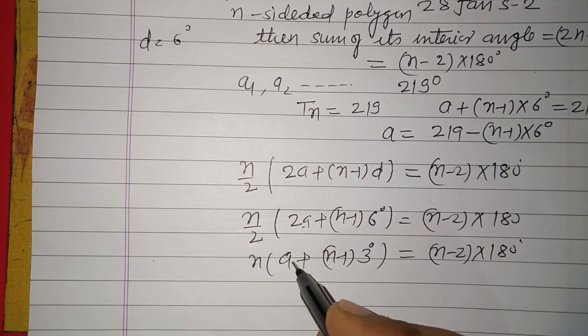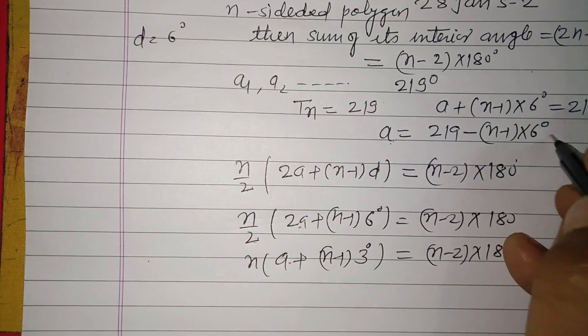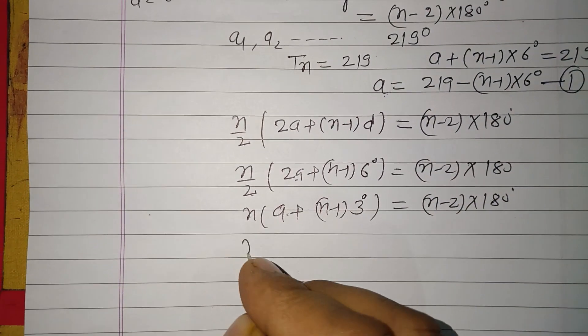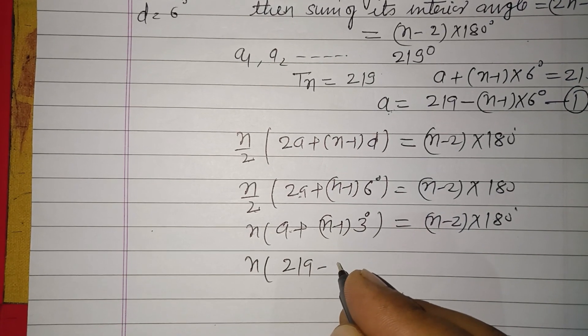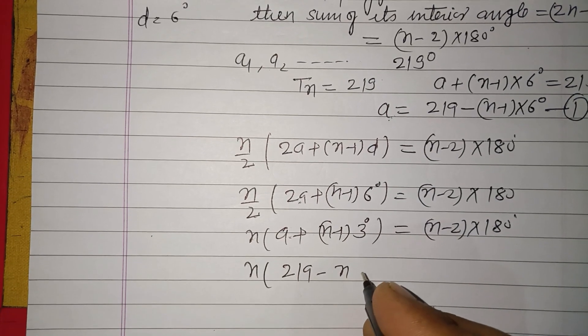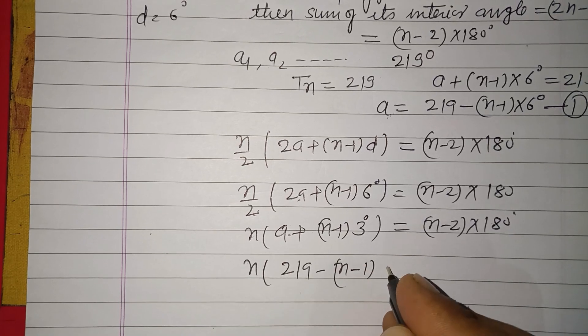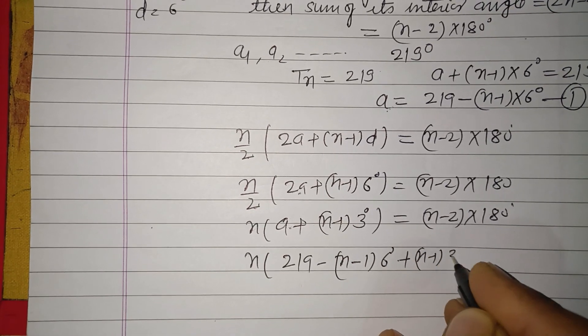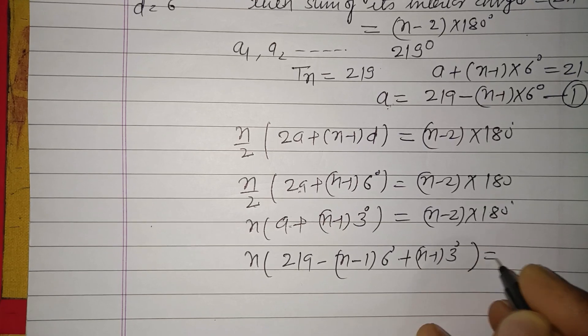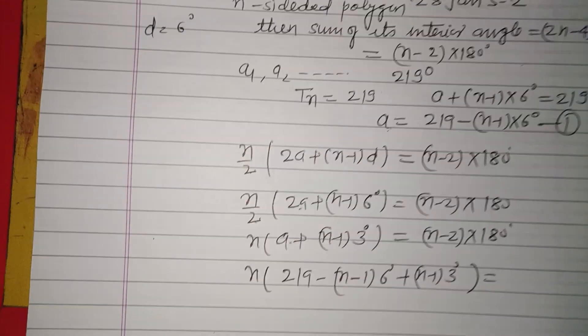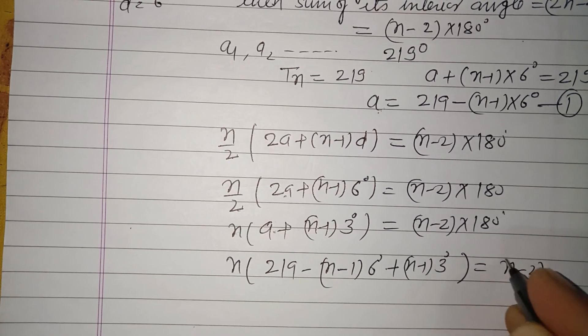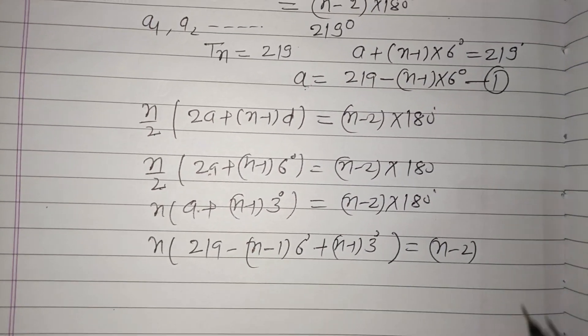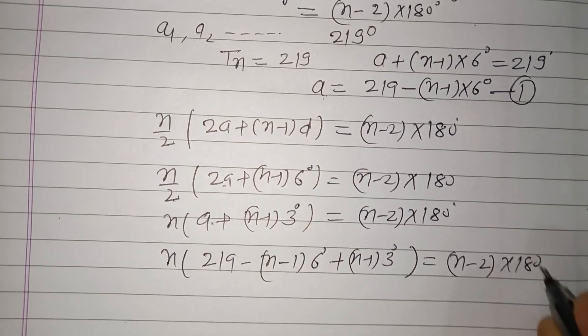Now substituting the value of a from equation 1, putting this value which is 219 minus n minus 1 into 6 plus n minus 1 into 3, that equals n minus 2 into 180.